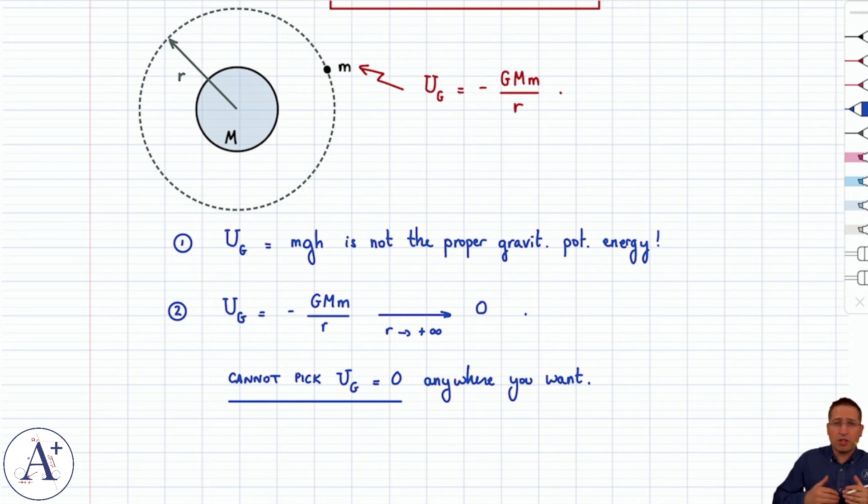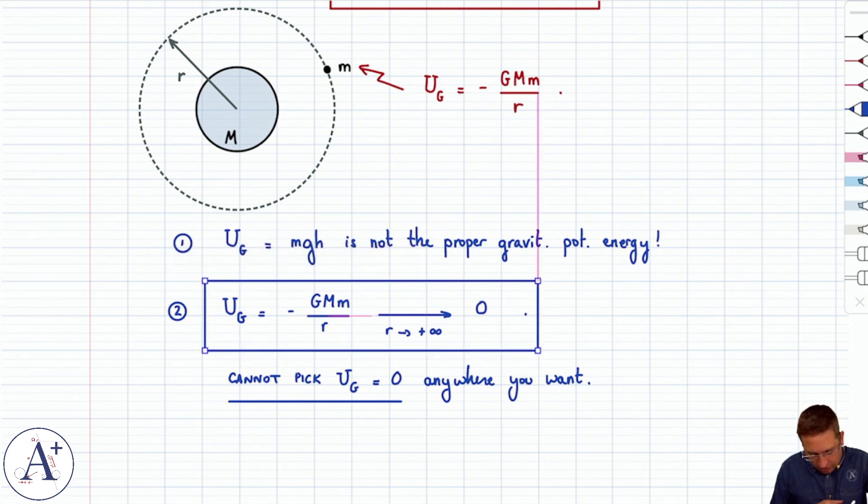MGH is OK as long as you're really close to the surface of the Earth, roller coasters, throwing a ball off a building or whatever. All that stuff's all cool. But when you're talking about gravitation, you need to use this form of the gravitational potential energy, which is associated with this reference, U equals zero when r goes to infinity.